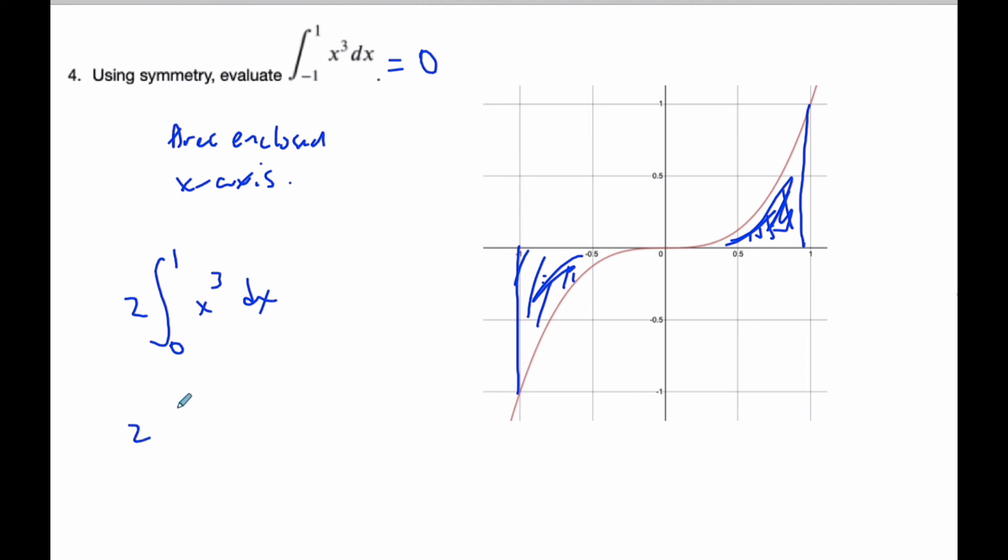So if I finish that off, I can clearly see that I add 1 to the exponent. It's going to be 1 quarter from 0 to 1, and it's going to be 2 times. I plug the 1 in, I get 1 quarter, the 0 cancels away, and it's going to be 1 half. So this is a quarter and this is a quarter, together they add up to 1 half.